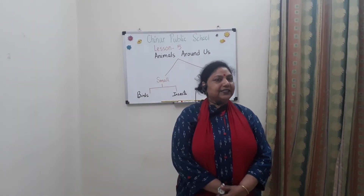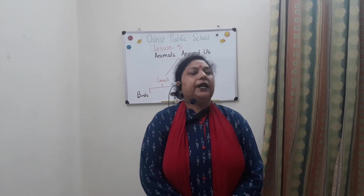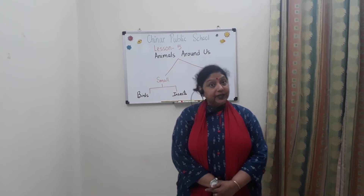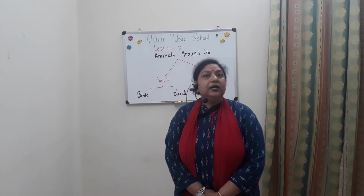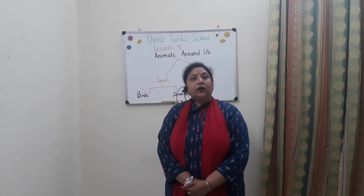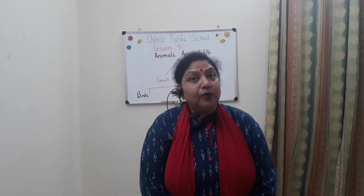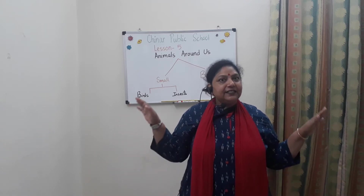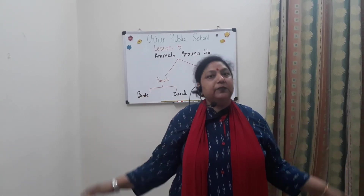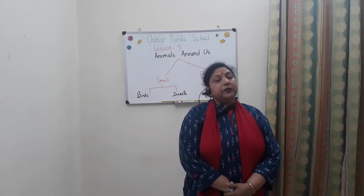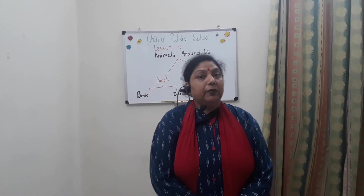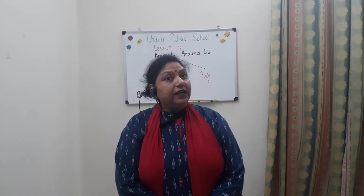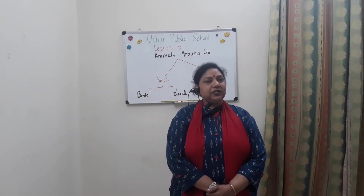Aur woh small animals kaun se hai? Birds and insects. Aapko pata hai, zyada tar animals ki four legs hoti hai. Most of the animals have four legs. But birds have two legs — birds ki do legs hoti hai. With the help of their legs, they walk and run around. And most birds can fly. Birds are known for flying in the sky — they open their wings and fly with the help of their wings. So birds have wings. And aapko pata hai, birds ki poori body pe feathers hote hai — their body is covered with feathers. And they make nests.